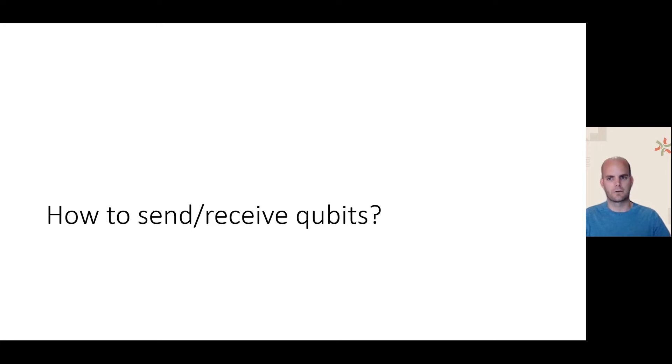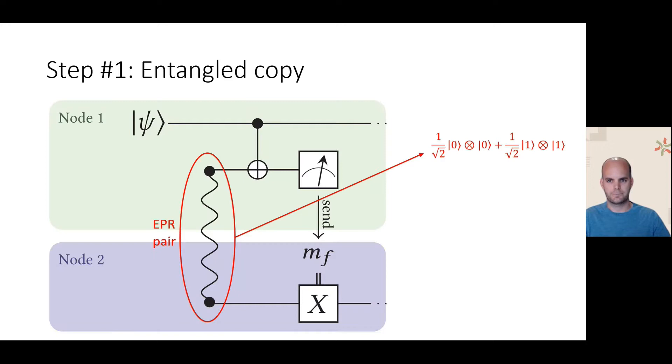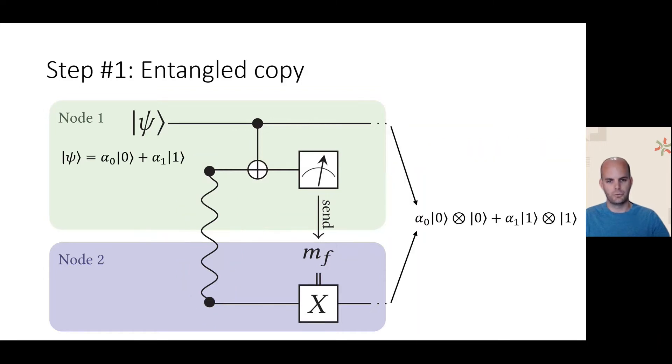So let's see how EPR pairs and classical communication can be used to send and receive qubits. As a first step, let's see how we can make an entangled copy of a qubit on a different node, assuming we have an EPR pair between the two nodes. The EPR pair's quantum state is ket zero zero plus ket one one up to renormalization. First, we entangle our qubit with our share of the EPR pair using a controlled NOT. Measuring our EPR qubit tells us the parity between the two qubits. We send this parity bit to node two with a classical send, and node two applies a correction. If the bit was one, node two applies an X correction.